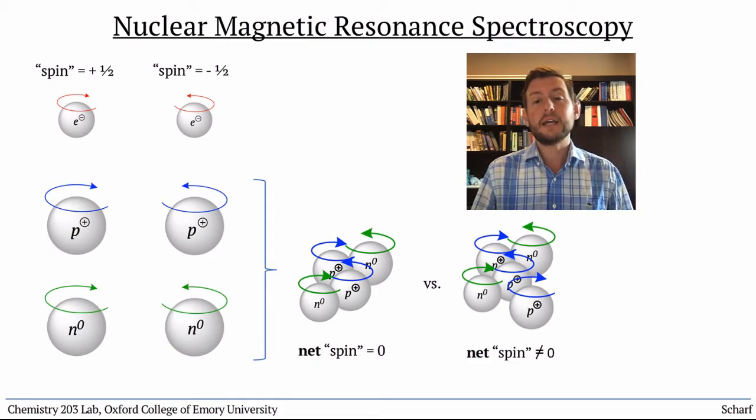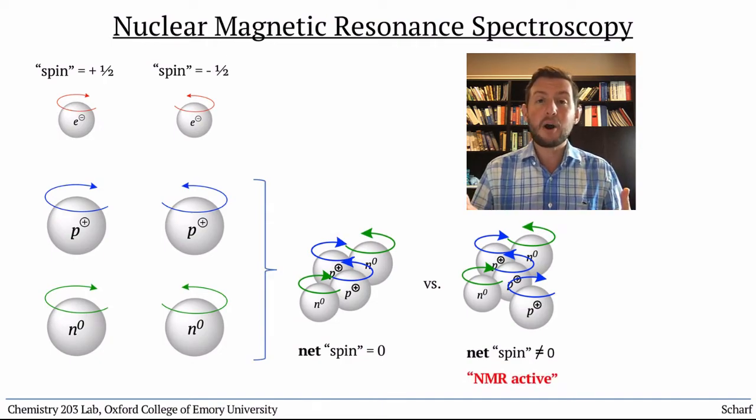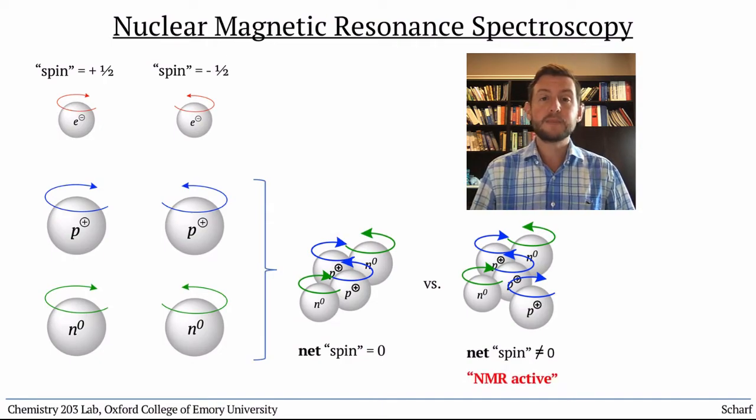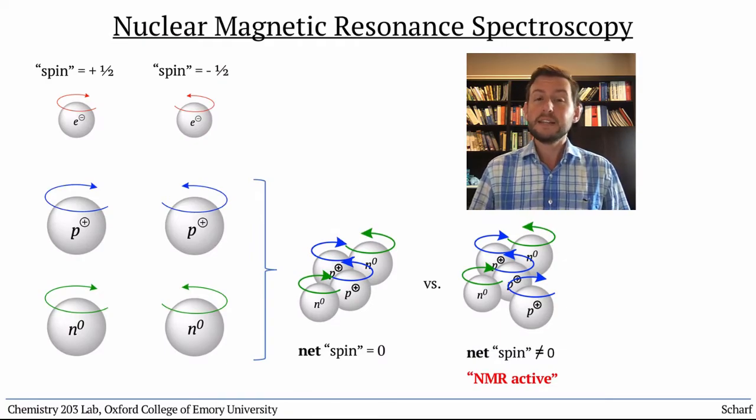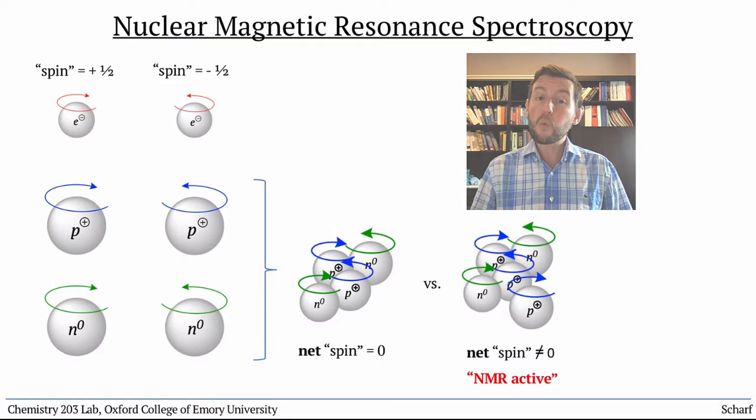These nuclei are special, and they're called NMR active nuclei, because they can absorb particular frequencies of radiation that give us information about where those nuclei are in relation to one another in a molecule.